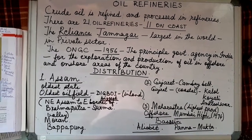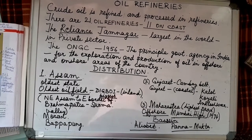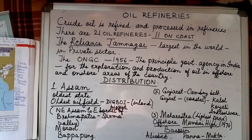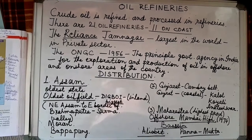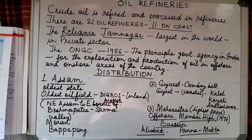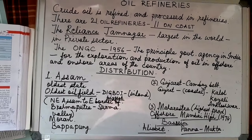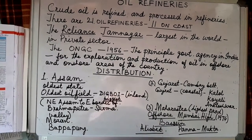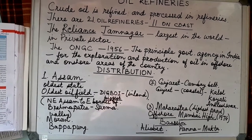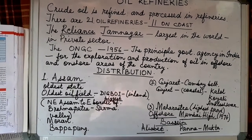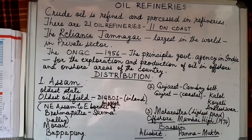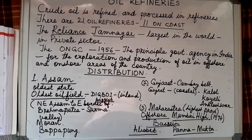Oil refineries are places where crude oil is refined through the process of fractional distillation. There are 21 oil refineries in India, out of which 11 are on the coast. The reasons why oil refineries are located on the coast are: most oil is imported through tankers, so to save on transport cost they are placed on the coast; also, since crude oil is inflammable, coastal location helps reduce accident risks.